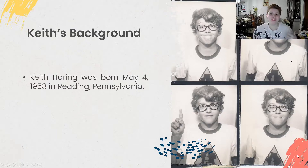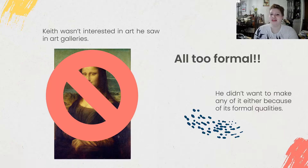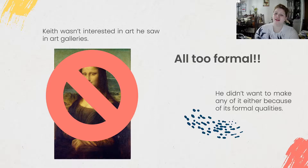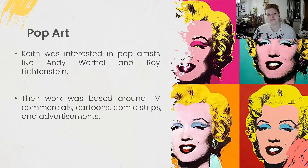To start off with Keith Haring's background: he was born in Reading, Pennsylvania on May 4th, 1958. Keith Haring wasn't really interested in the work he saw in art galleries because he believed it was way too formal. Things like the Mona Lisa were just really boring to him, and he wanted to make his own form of art that would break the boundaries he was seeing in the art world.